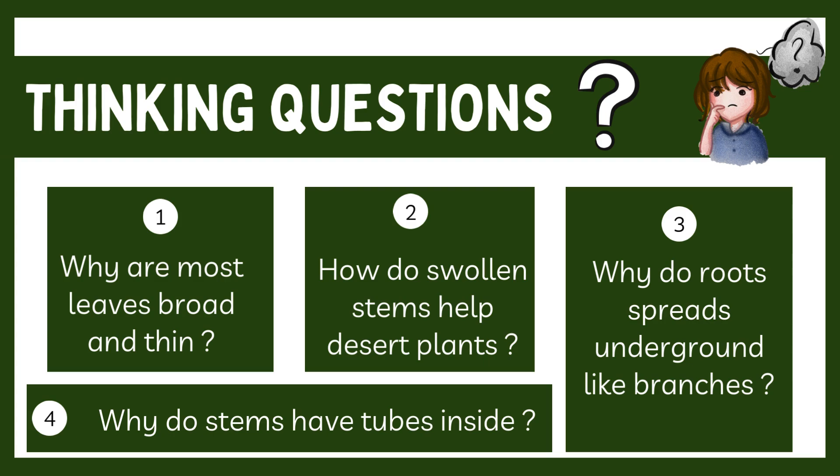Now let me ask you some questions — let's think about some questions together. Number one: why are most leaves broad and thin? Some leaves are broad and thin to catch more sunlight for photosynthesis.